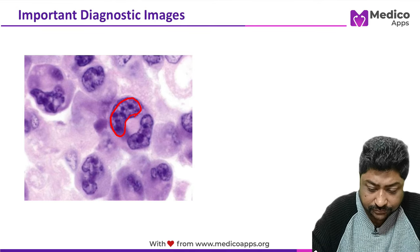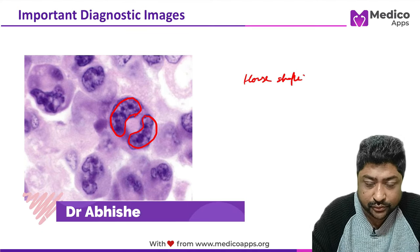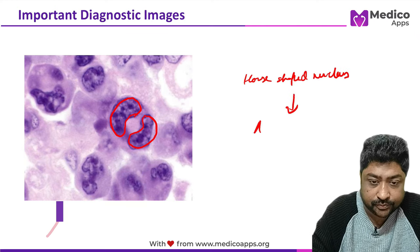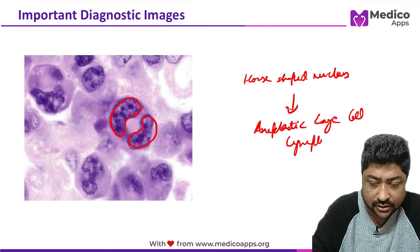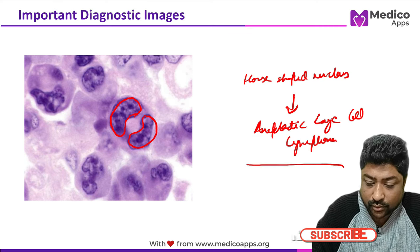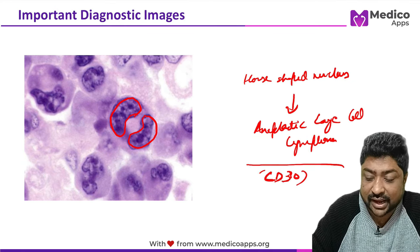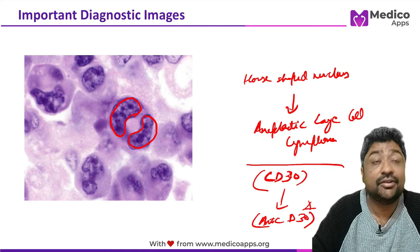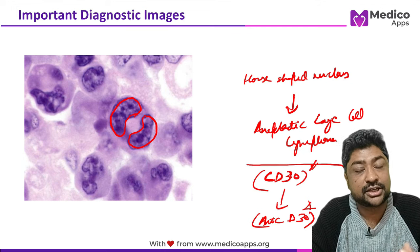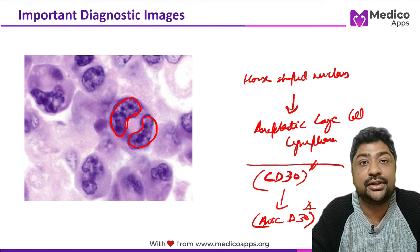The next image shows a horseshoe-shaped nucleus, seen in anaplastic large cell lymphoma. A very important point: these cells express CD30, and there are good anti-CD30 molecules available. Because of targeted CD30 therapy, anaplastic large cell lymphoma now has very good prognosis.